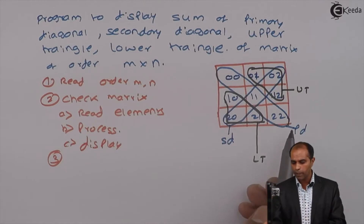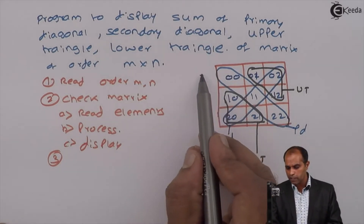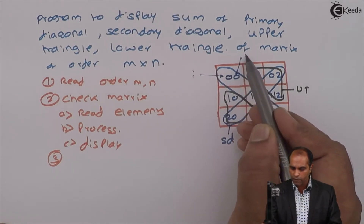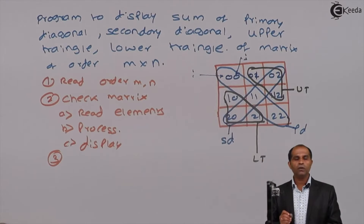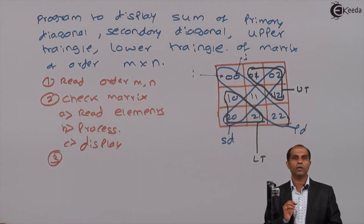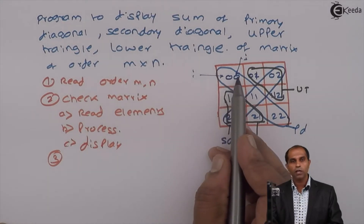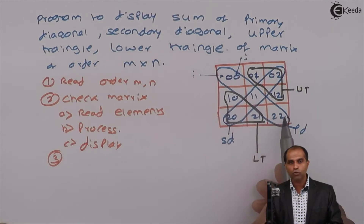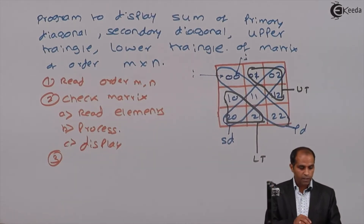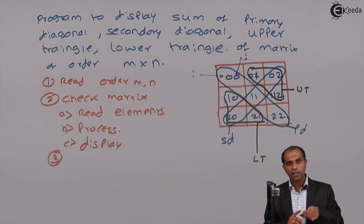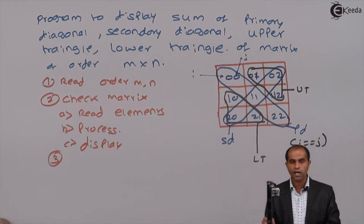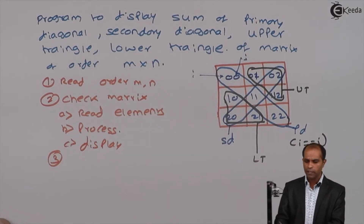Let's check the primary diagonal. We know that the first index is always referred to as I and the second index as J. The value of I and J will tell you whether the element is a primary diagonal, secondary diagonal, upper triangle, or lower triangle. For the primary diagonal: I=0, J=0; I=1, J=1; I=2, J=2. That tells us that when index I matches index J, it is a primary diagonal element. So the condition for primary diagonal is I == J.